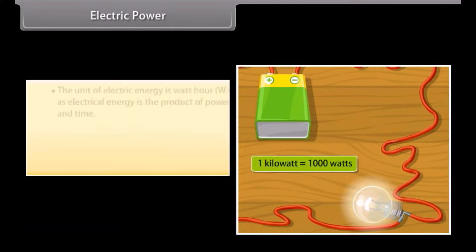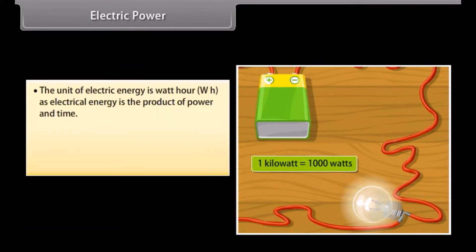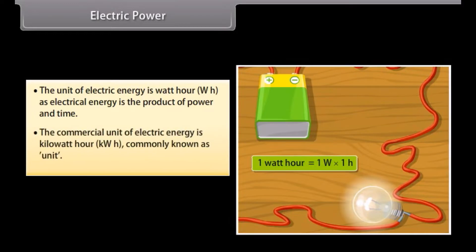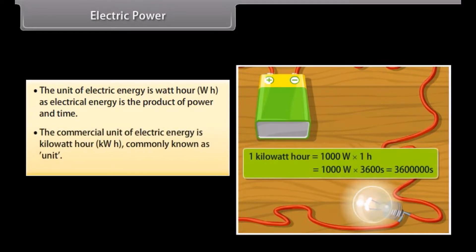The unit of electric energy is the watt-hour (Wh), as electrical energy is the product of power and time. The commercial unit of electric energy is the kilowatt-hour (kWh), commonly known as a unit.